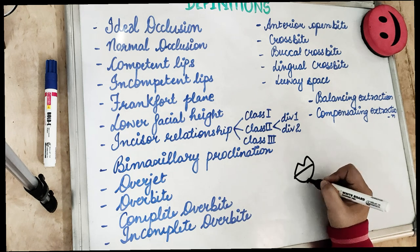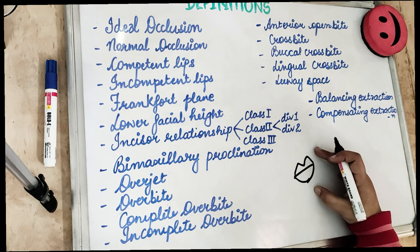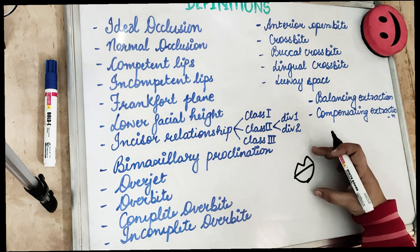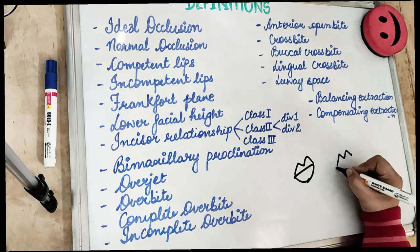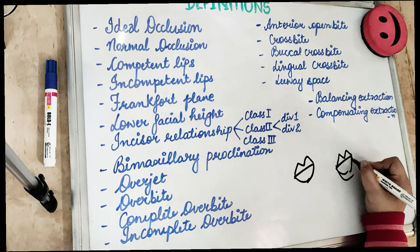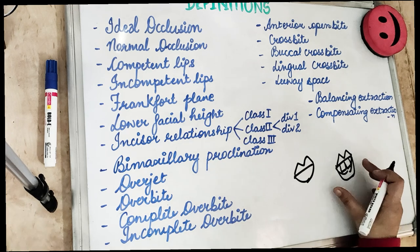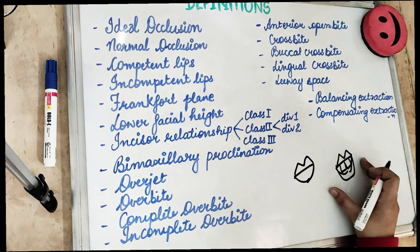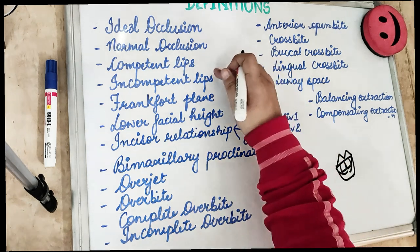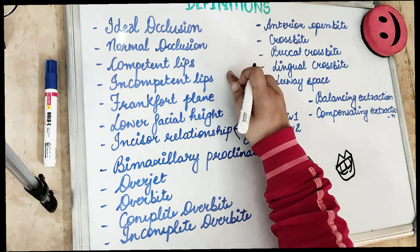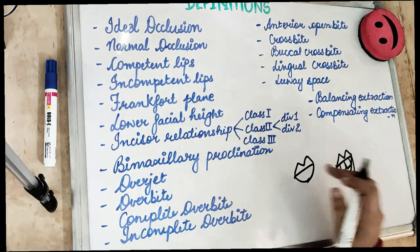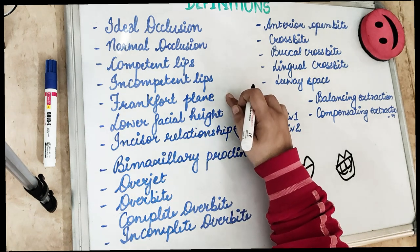Next is competent lips. When the lips at rest meet each other, they are known as competent lips. On the other hand, some people have rabbit teeth — at rest they have visible teeth, which is known as incompetent lips, when the lips don't meet each other at rest.